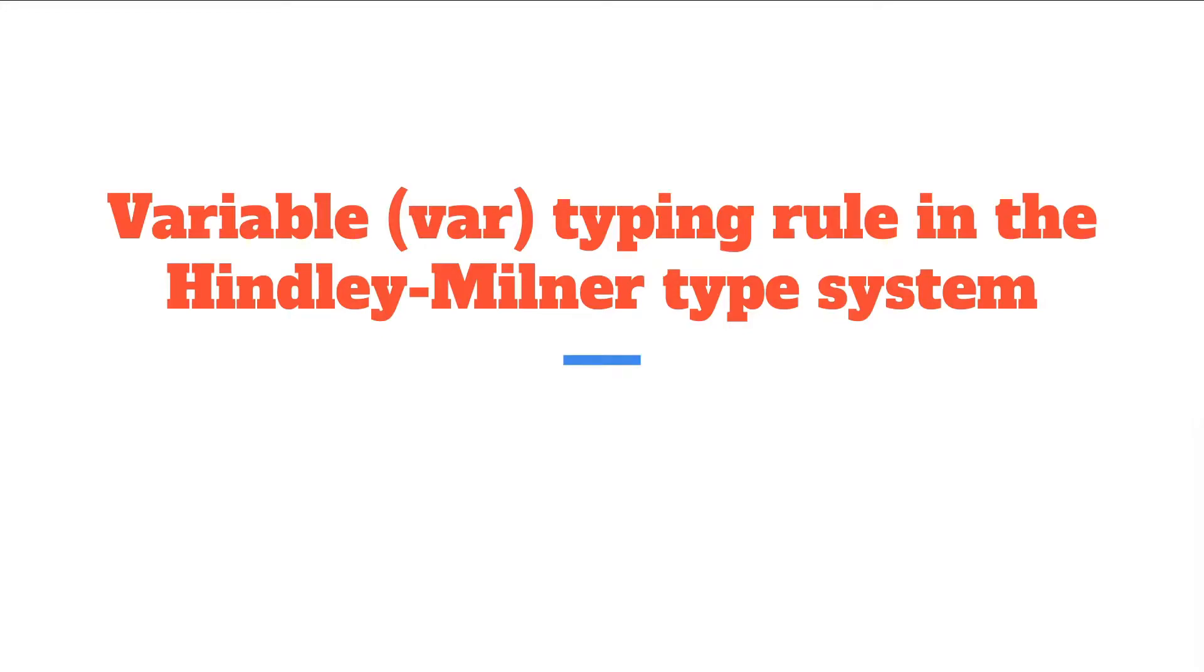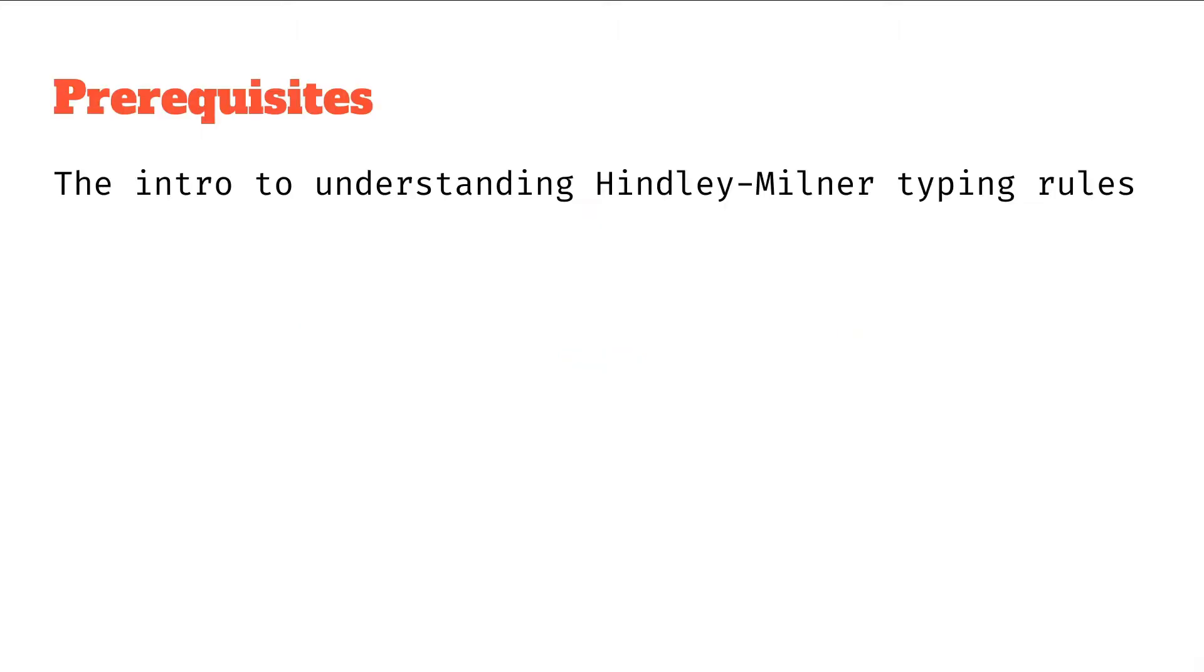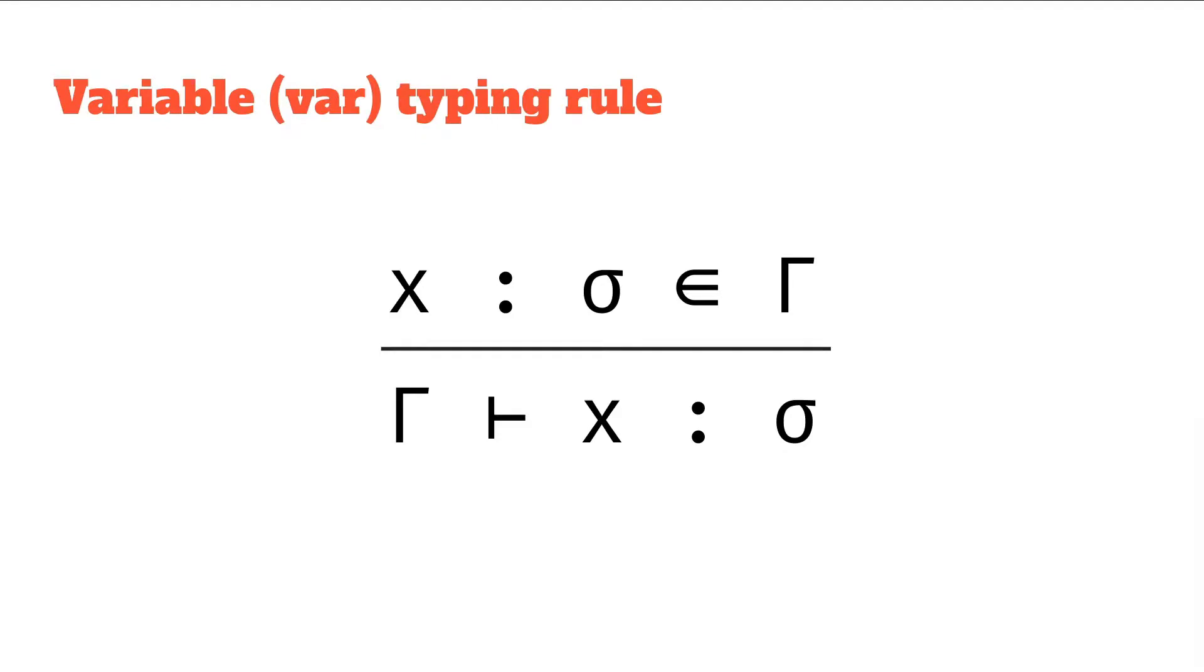So let's look at the first of our typing rules, that's for variable expressions or var is the short name we give them. If you haven't seen it already, I'd recommend the intro to this mini sub-series. It explains what the context is and how these videos are going to be structured. So without further ado, what is the rule?